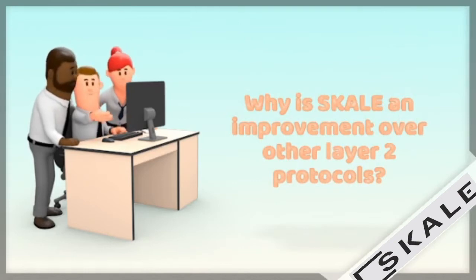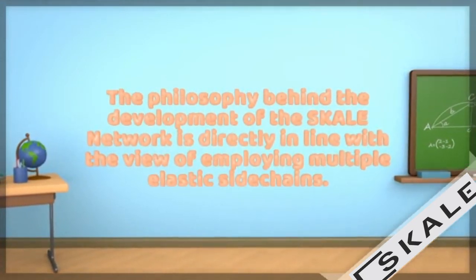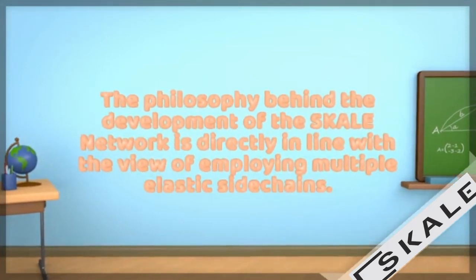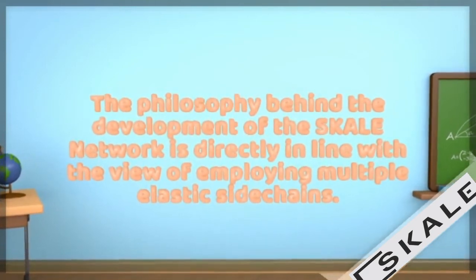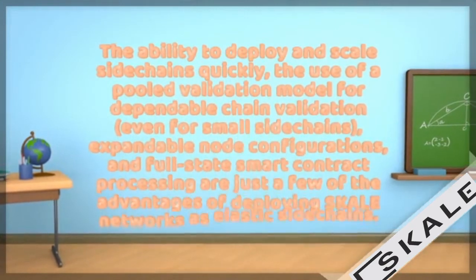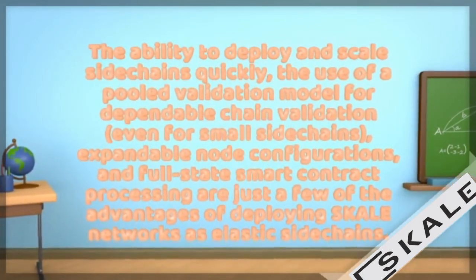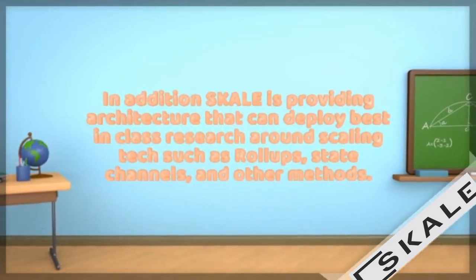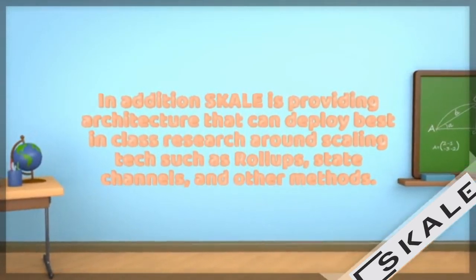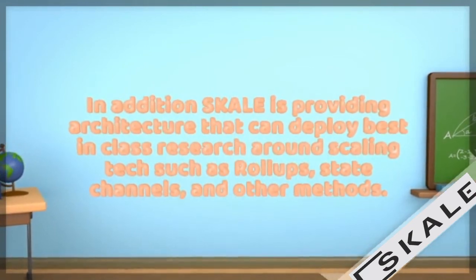Let's see why SCALE is an improvement over other Layer 2 protocols. The philosophy behind the development of the SCALE network is directly in line with employing multiple elastic side chains. The ability to deploy and scale side chains quickly, the use of a pooled validation model for dependable chain validation even for small side chains, expandable node configurations, and full state smart contract processing are just a few of the advantages. In addition, SCALE provides architecture that can deploy best-in-class research around scaling tech such as rollups, state channels, and other methods.